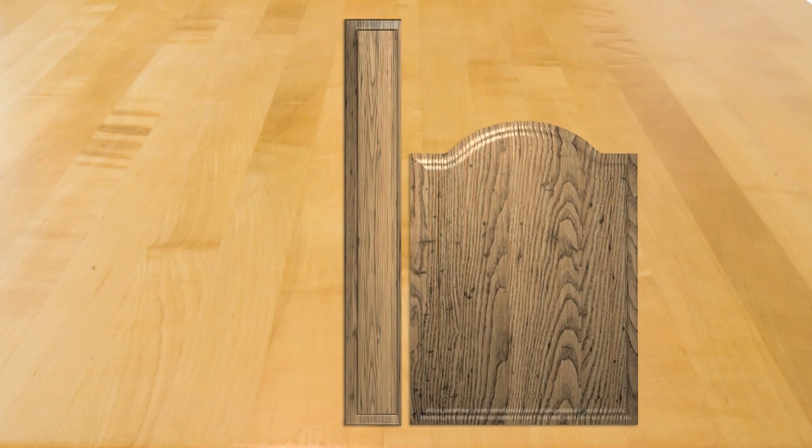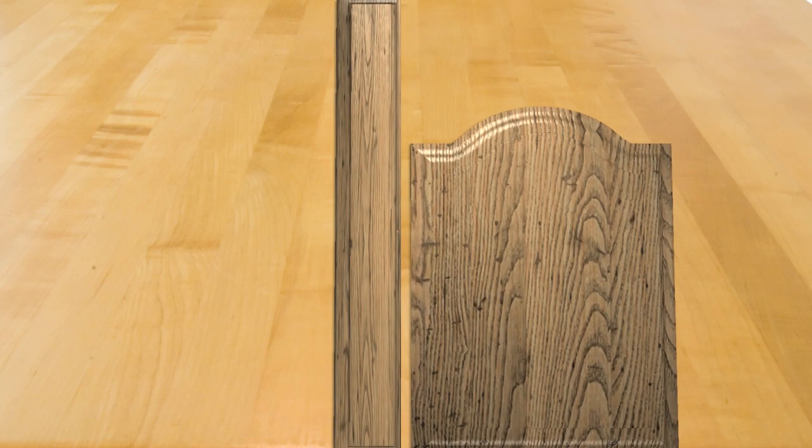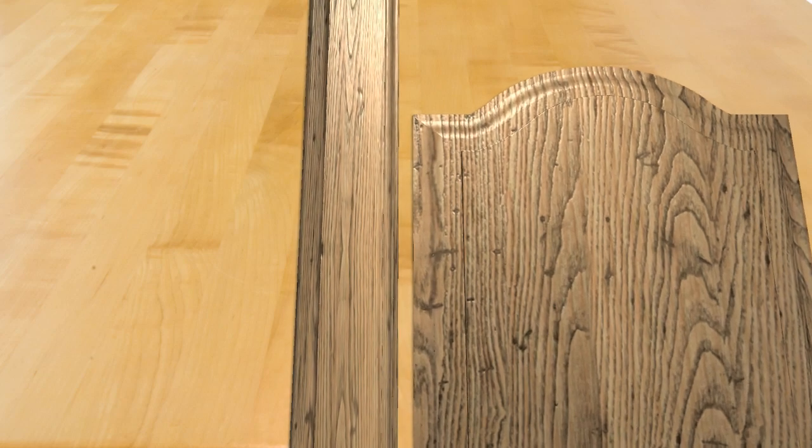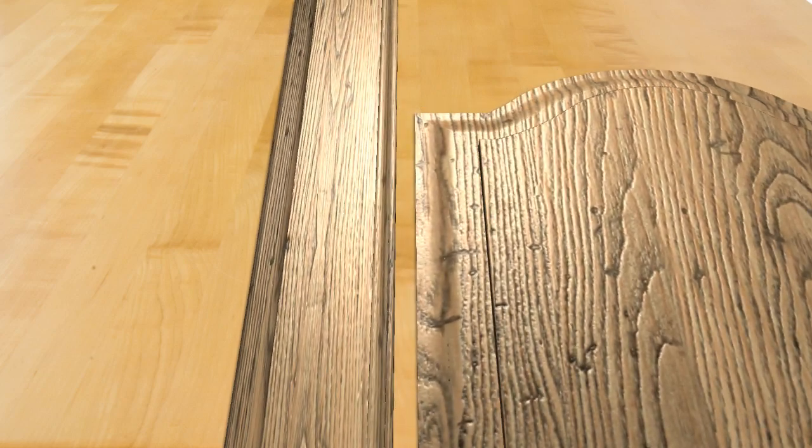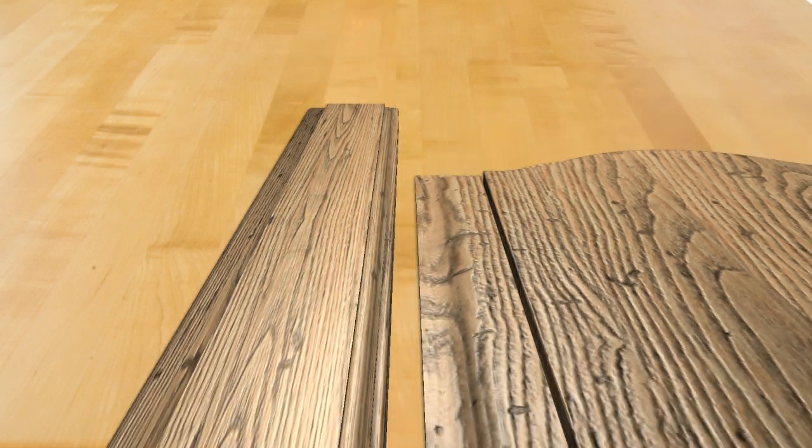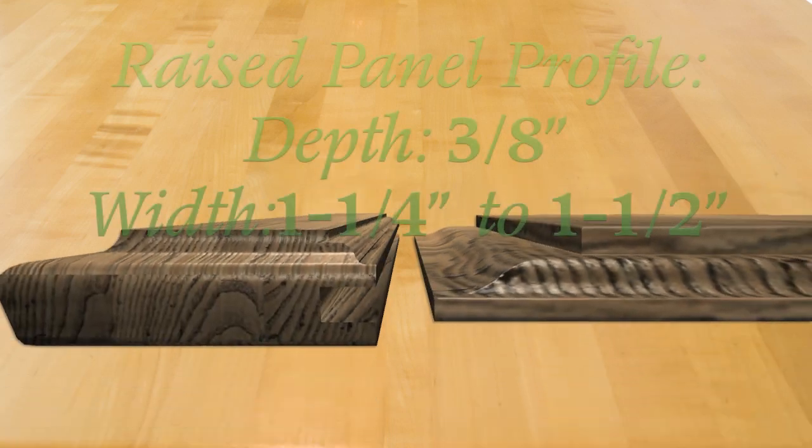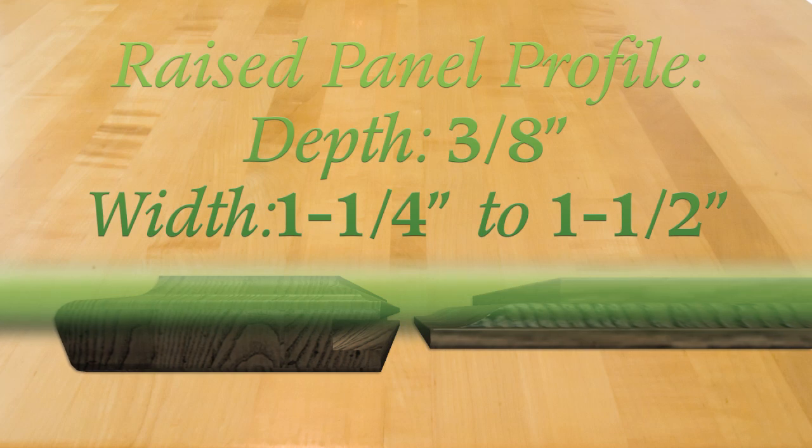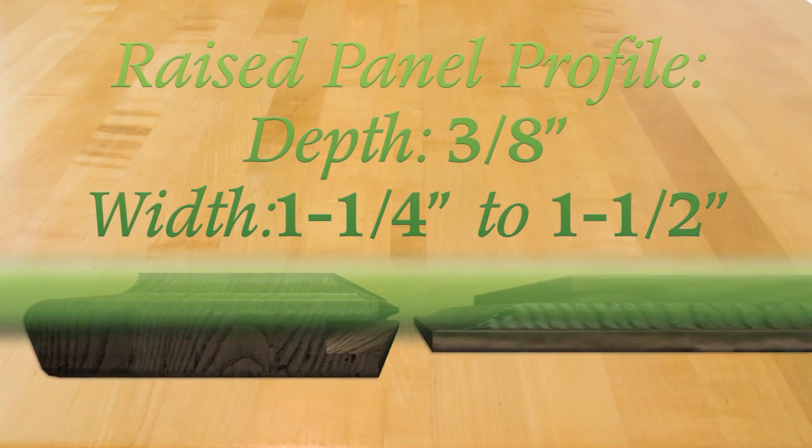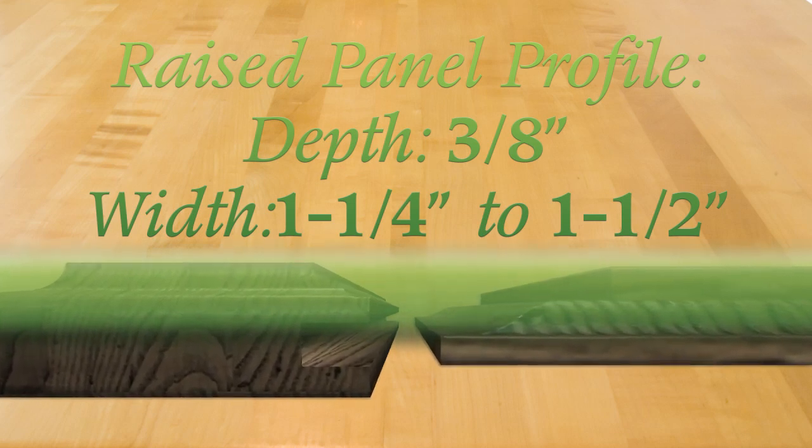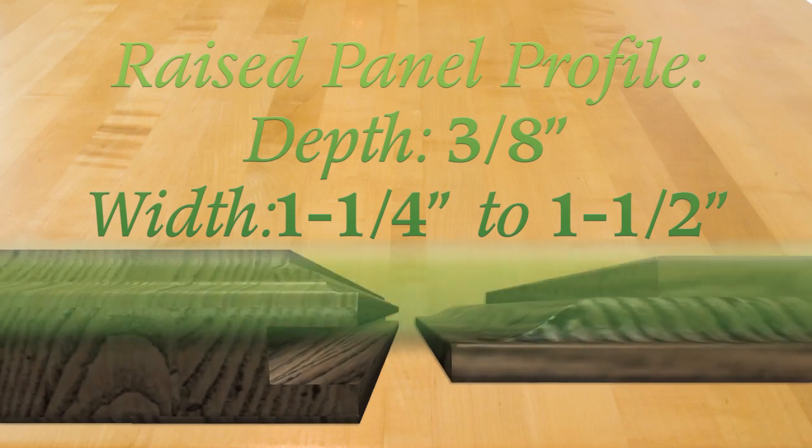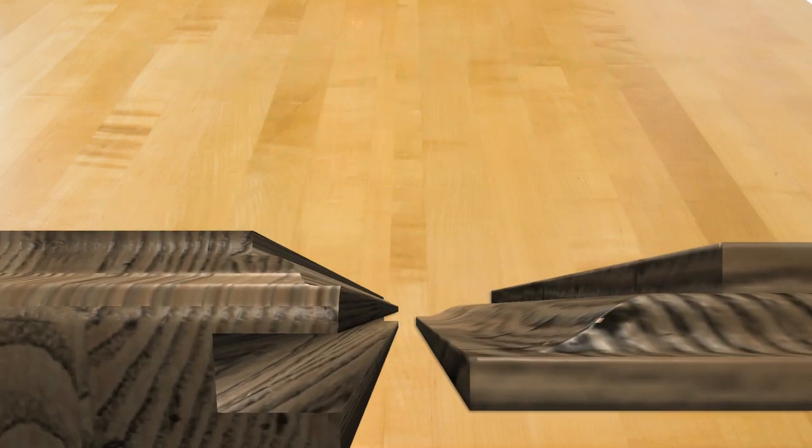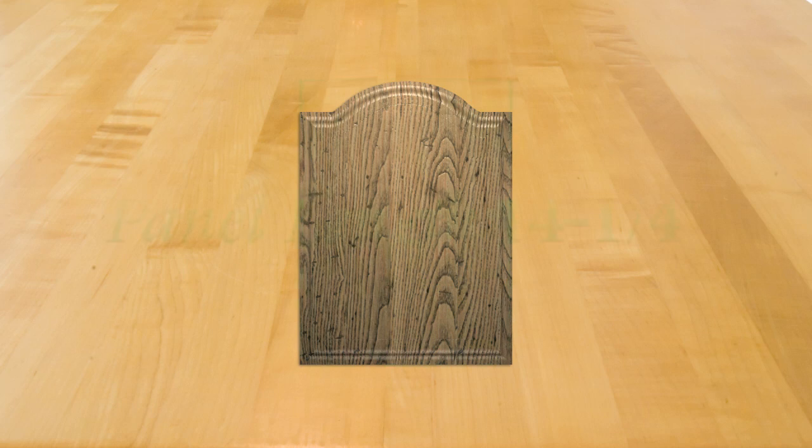There are some dimensions to consider when making raised panels. Raised panel bits usually cut a 3/8 inch high profile, measured from the face of the tongue to the panel face. This corresponds to the 3/4 inch height setting of most cope and pattern bits. These bits also cut a 3/4 inch to 7/8 inch wide profile. When assembled, the face of the panel and frame will be flush to each other.